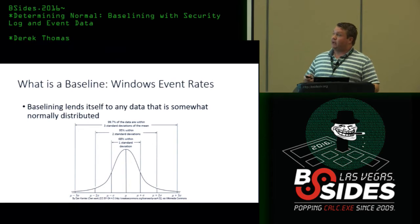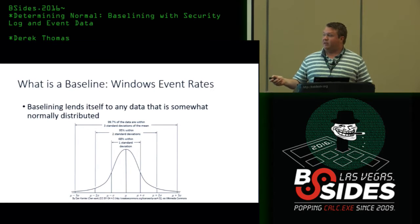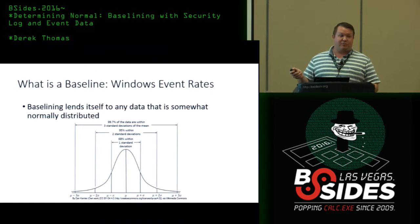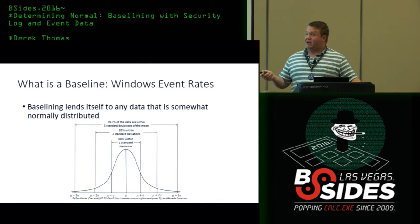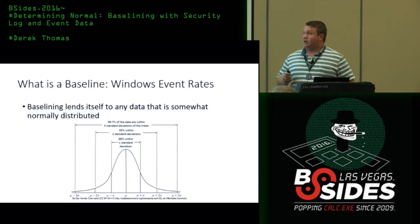We're going to talk about baselining events that follow a normal distribution. A lot of the data we look at will be approximately normal. The normal distribution means that on average, activity will occur near the average, and as you go farther above or below that count, the probability decreases. If it follows a normal distribution, 68% of the time data falls within one standard deviation of the mean, 95% within two, and 99.73% within three.